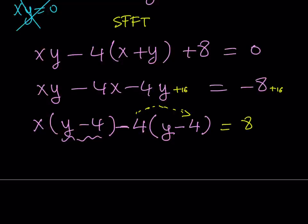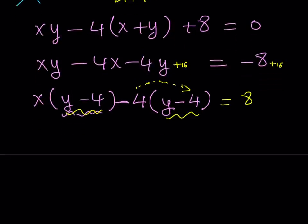That's how Simon works. In case you're wondering what Simon is, it is also called SSFT, which is Simon's favorite factoring trick. But I just call it Simon because it's shorter. So I'm using Simon here. Since I added 16 to both sides, that is going to equal 8. Great. Now we have a common factor: (x - 4)(y - 4) = 8.